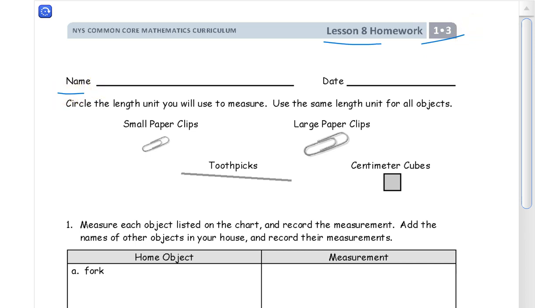In this one we have some choice about what to use for measuring unit. Either you're going to measure some things in your house or wherever you live and circle the length unit you'll use to measure. If you're going to use toothpicks, then circle the toothpicks. If you're going to use small paperclips, then use small paperclips to measure and count small paperclips.